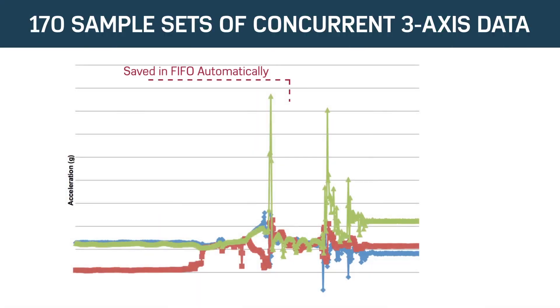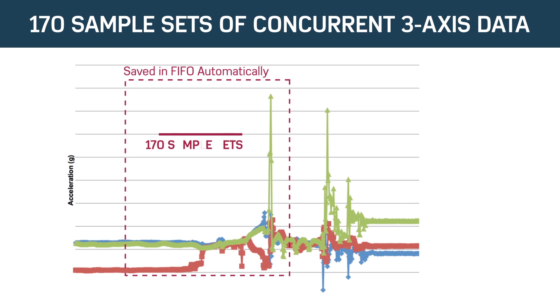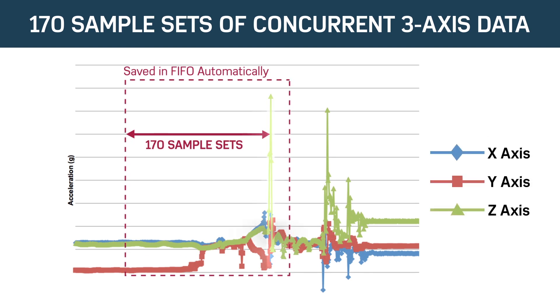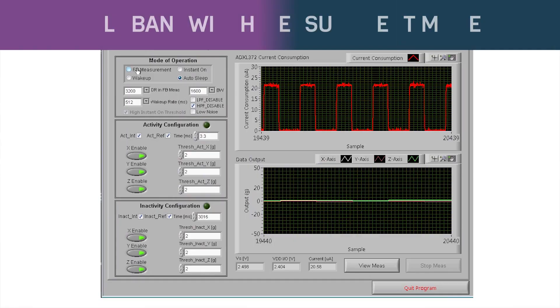The ADXL372 can save as many as 170 samples of concurrent 3-axis data before the trigger event, to make sure nothing was missed before the impact event, even when the processor is in sleep mode.